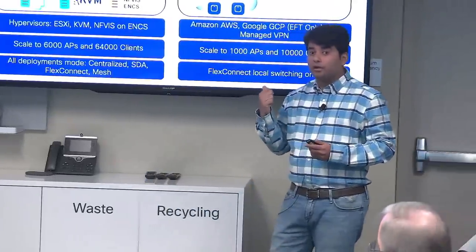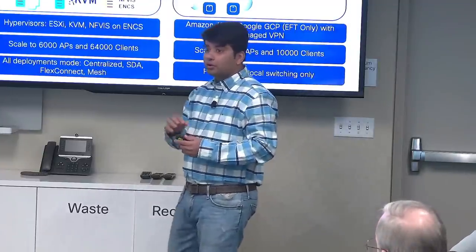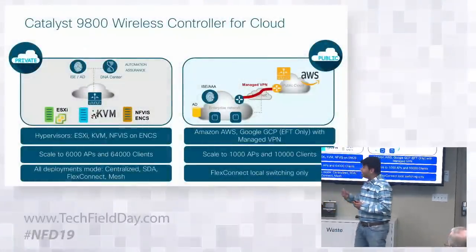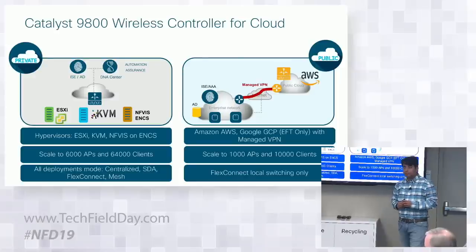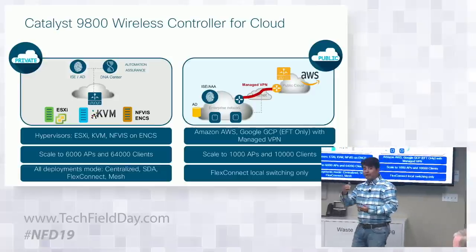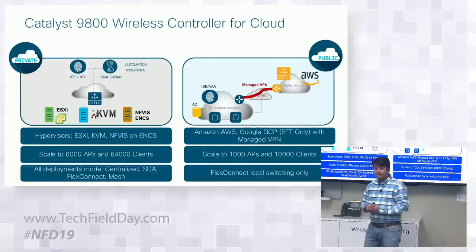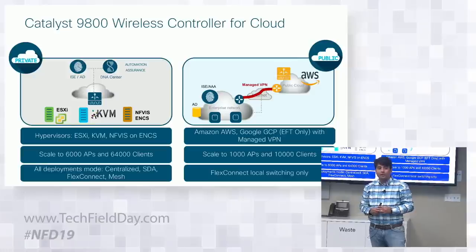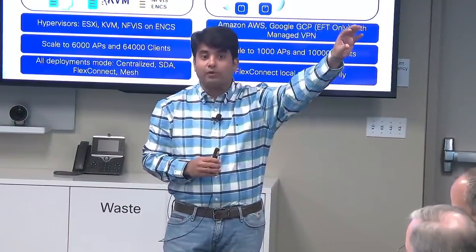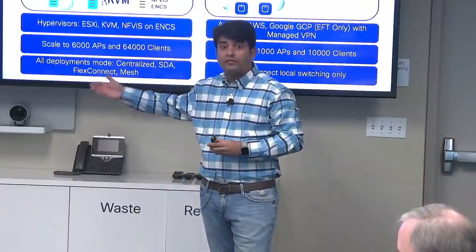For the public cloud, the same Catalyst 9800 software will be available on the AWS Marketplace. You can search for Catalyst 9800 Wireless Controller, instantiate a virtual machine on the cloud, and it will support up to 1,000 access points and 10,000 wireless clients. It will only support FlexConnect local switching, because traffic exiting the cloud incurs cost. With FlexConnect local switching, data traffic stays locally in your branches, and only the control plane is managed from the controller in the cloud — image management and config management can be done from AWS.